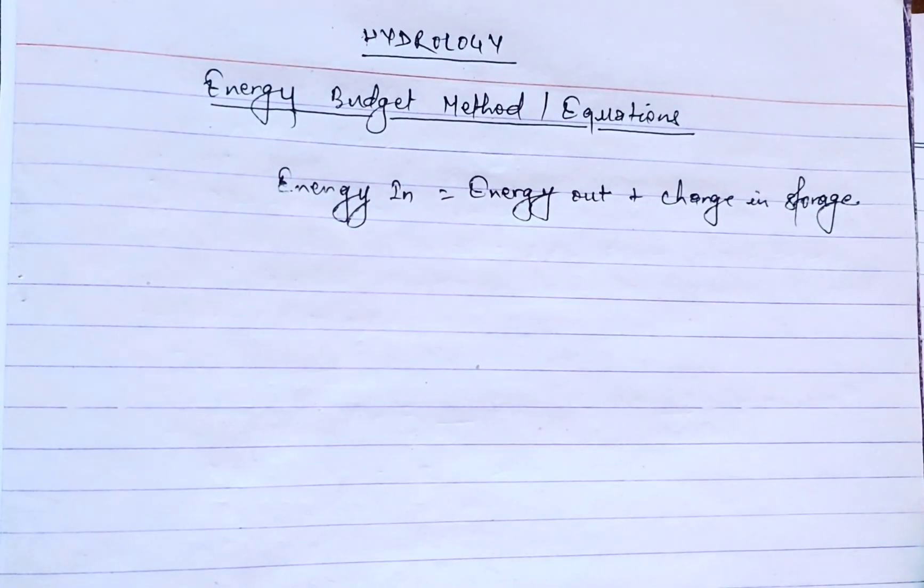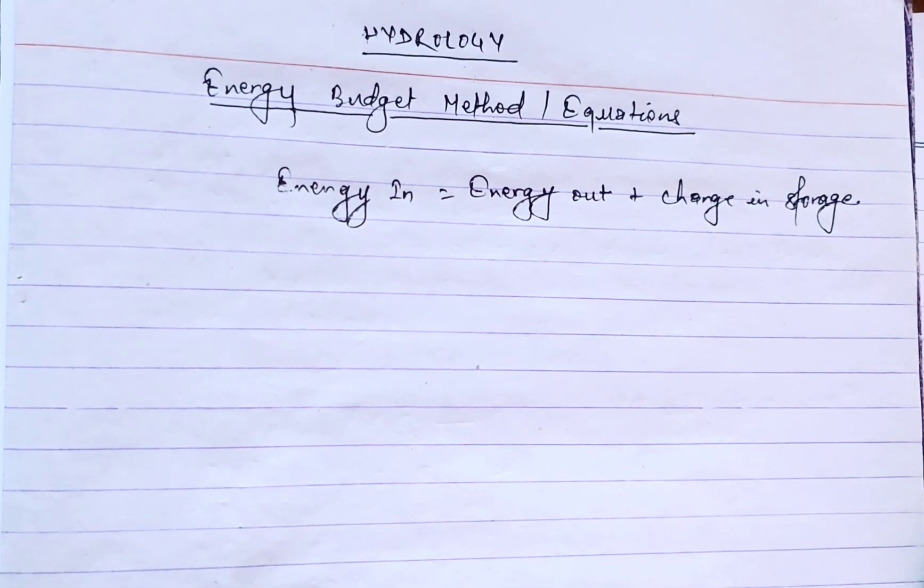It also involves application of the law of conservation of energy and estimation of evaporation from lake. This method has been found to give satisfactory results with errors in order of 5% when applied in periods less than a week. Now let's derive the energy balance equation.